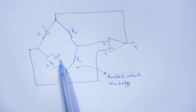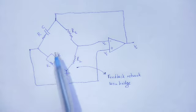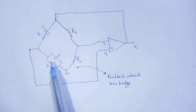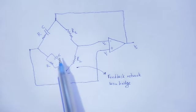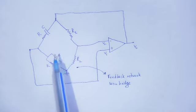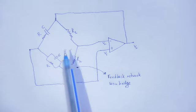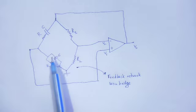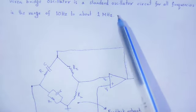As we know, capacitive reactance Xc is inversely proportional to frequency. If frequency is high, capacitive reactance will be low; if frequency is low, capacitive reactance is high. During both high frequency and low frequency extremes, the frequency response of the arrangement does not hold good. For this reason there is a frequency range called the resonant frequency, through which the oscillator responds well, and that range is around 10 Hz to about 1 MHz.